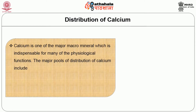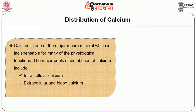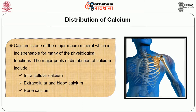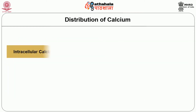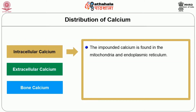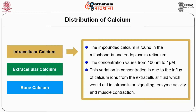Let us start the session with the distribution of calcium. Calcium is one of the major macro minerals indispensable for many physiological functions. The major pools of distribution of calcium include intracellular calcium, extracellular and blood calcium, and bone calcium. The intracellular calcium is found in the mitochondria and endoplasmic reticulum. This variation in concentration is due to the influx of calcium ions from the extracellular fluid, which aids in intracellular signaling, enzyme activity, and muscle contraction.